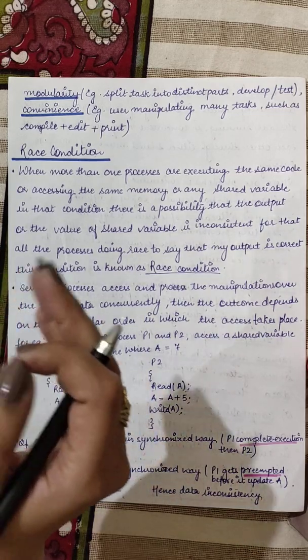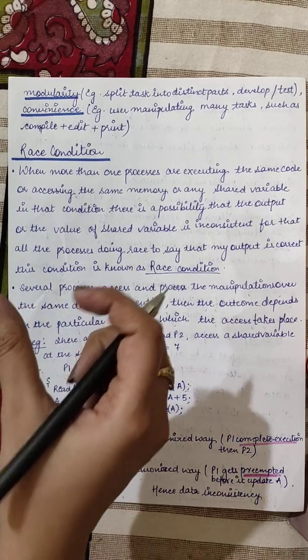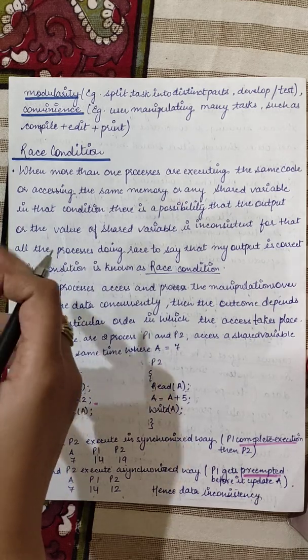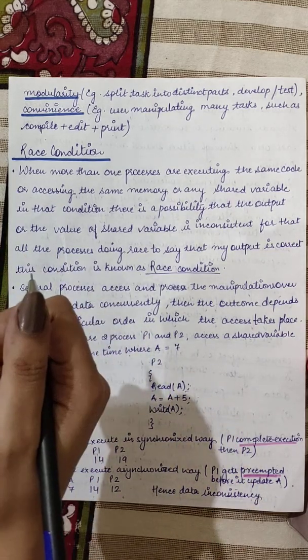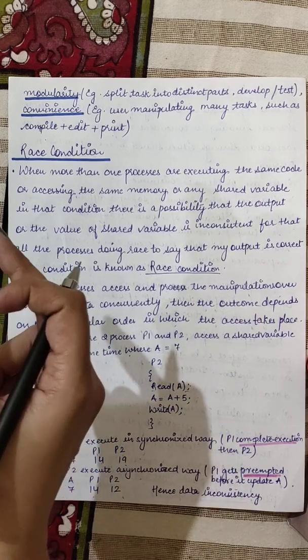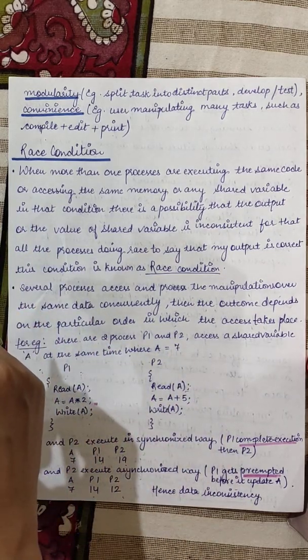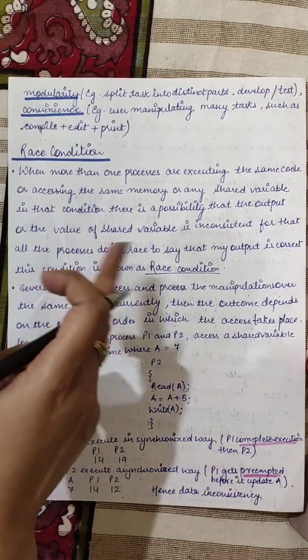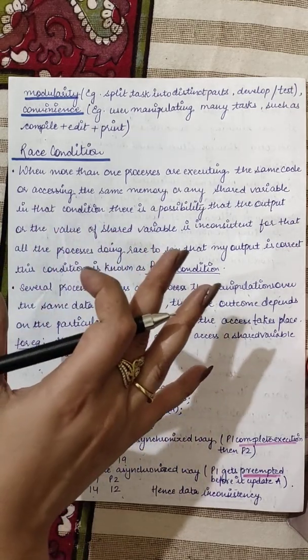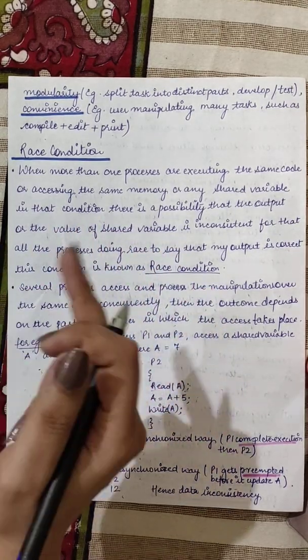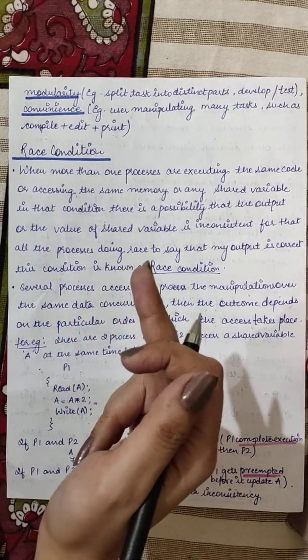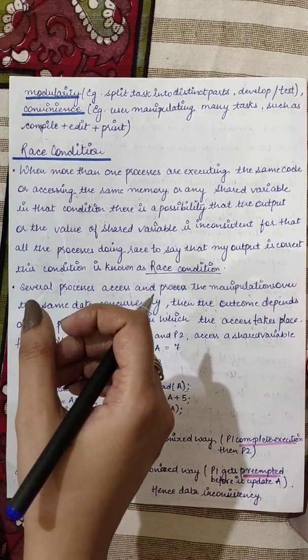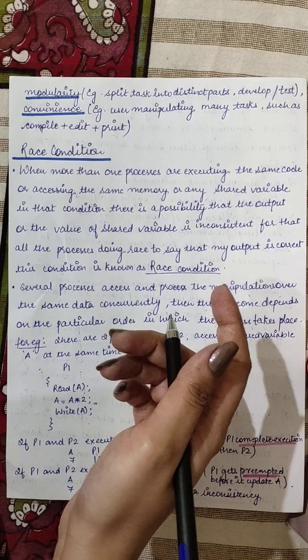Race condition mein kya hota hai ki jo aapke ek se zyada processes chal rahe hai jab woh kisi shared resource ko, jo ki matlab shared memory maan lo ya koi code hai jab yeh usko access karenge, to yeh log values update karayenge and every process will think that my output is correct. Woh hota hai race condition kyunki ek saath bahut sare processes us shared resource ko, chahe woh memory ho, data ho, variables ho, whatever is the shared thing is, usko access karenge. So they will be trying to update that resource and har process yeh bolega mera output sahi hai.